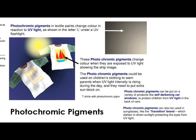Photochromic pigments react to UV light specifically. When they are exposed to UV light, they change colour. The classic use for these is transition lenses, which used to be really fashionable in the 90s. It means a pair of glasses that when you go outside into sunlight, the UV will make them go dark, protecting your eyes — creating almost like a pair of sunglasses within the same product. You can still have your prescription lens glasses and they will transition and go darker when exposed to UV light.